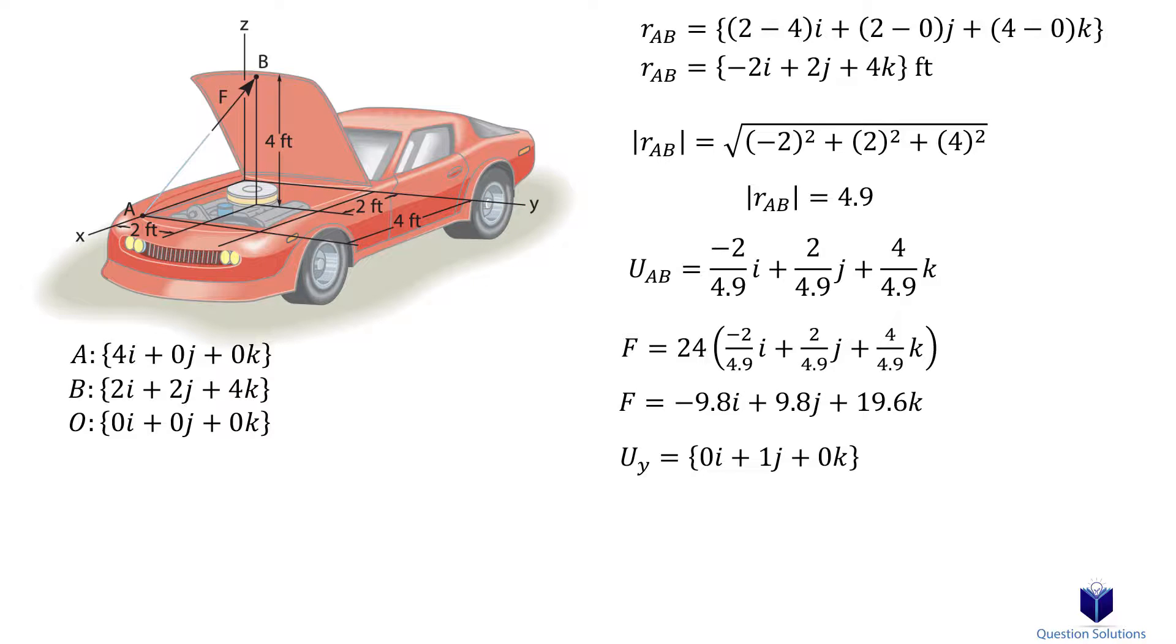We also need to figure out another position vector from the origin to the location where the force is originating, which in this problem is at point A. So our position vector OA is 4i plus 0j plus 0k.